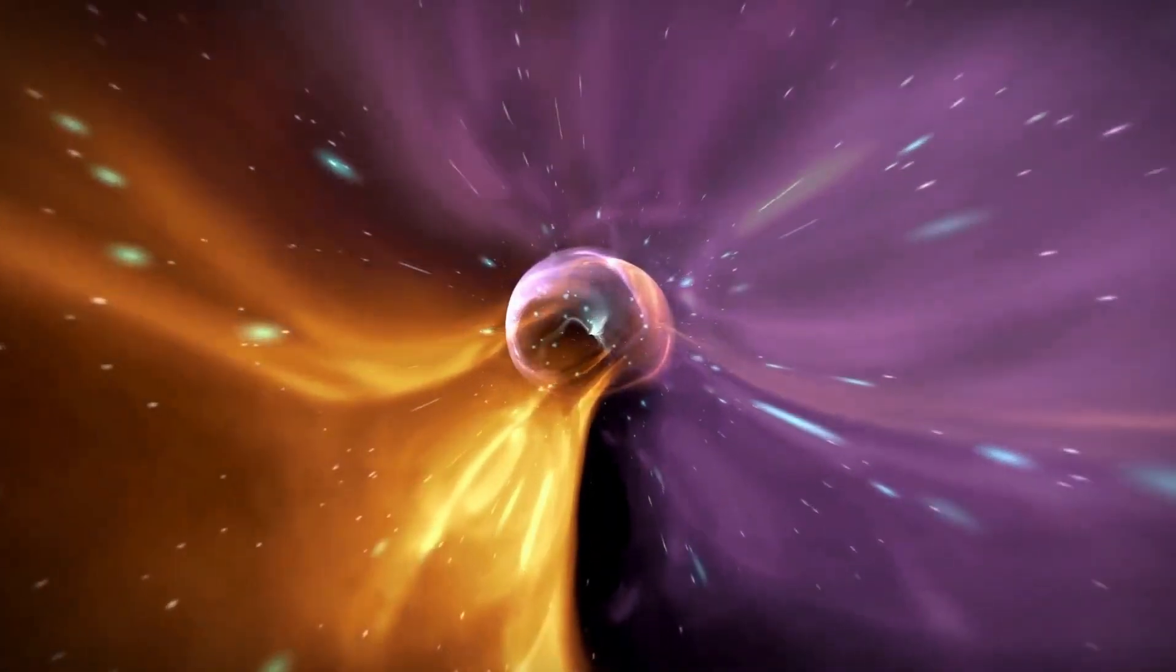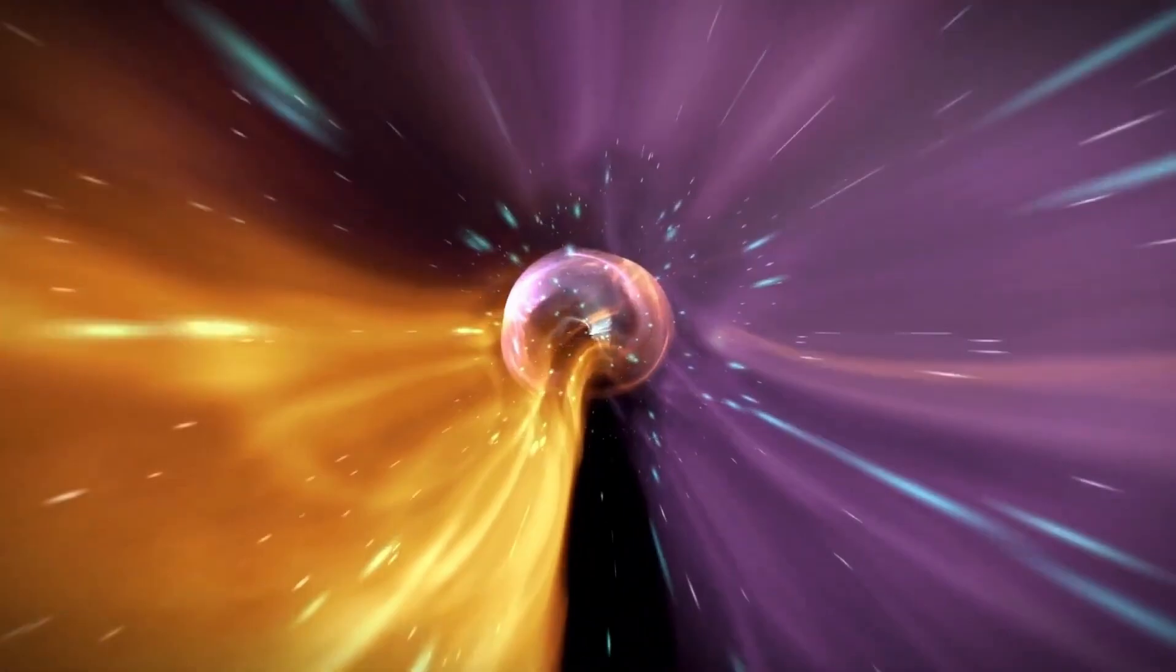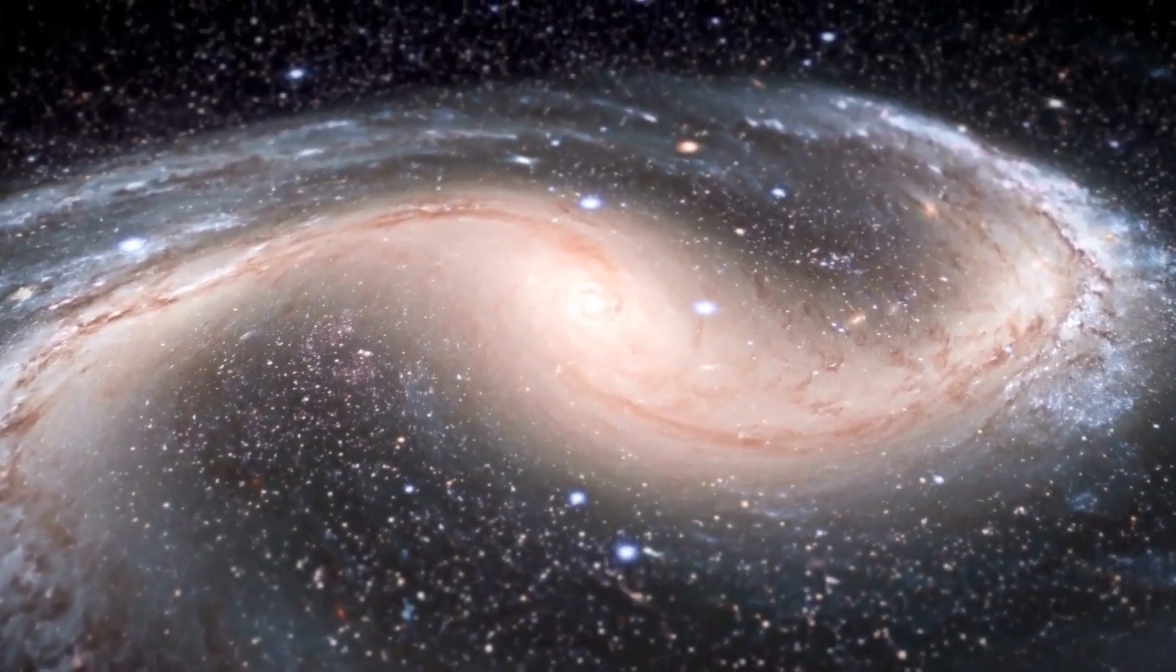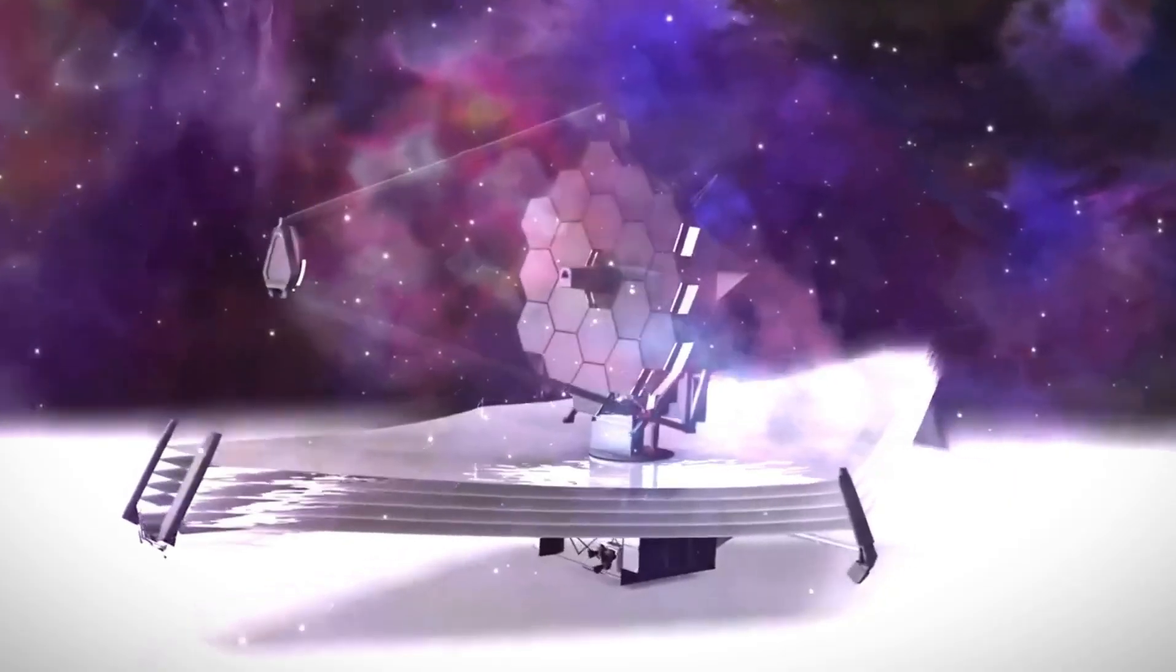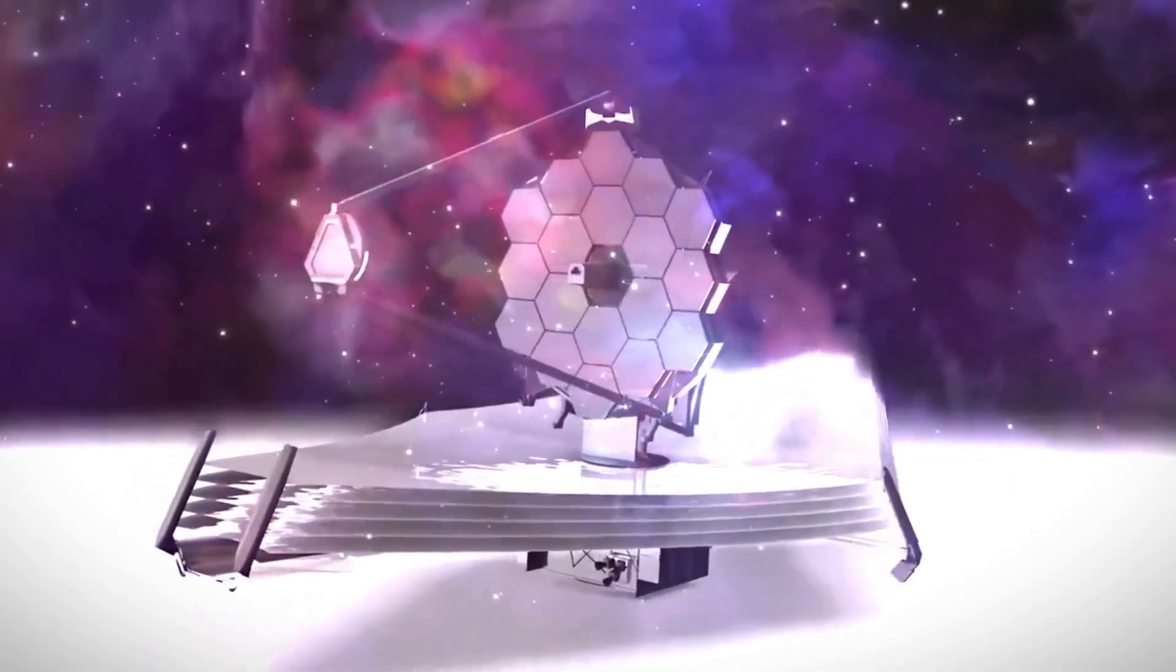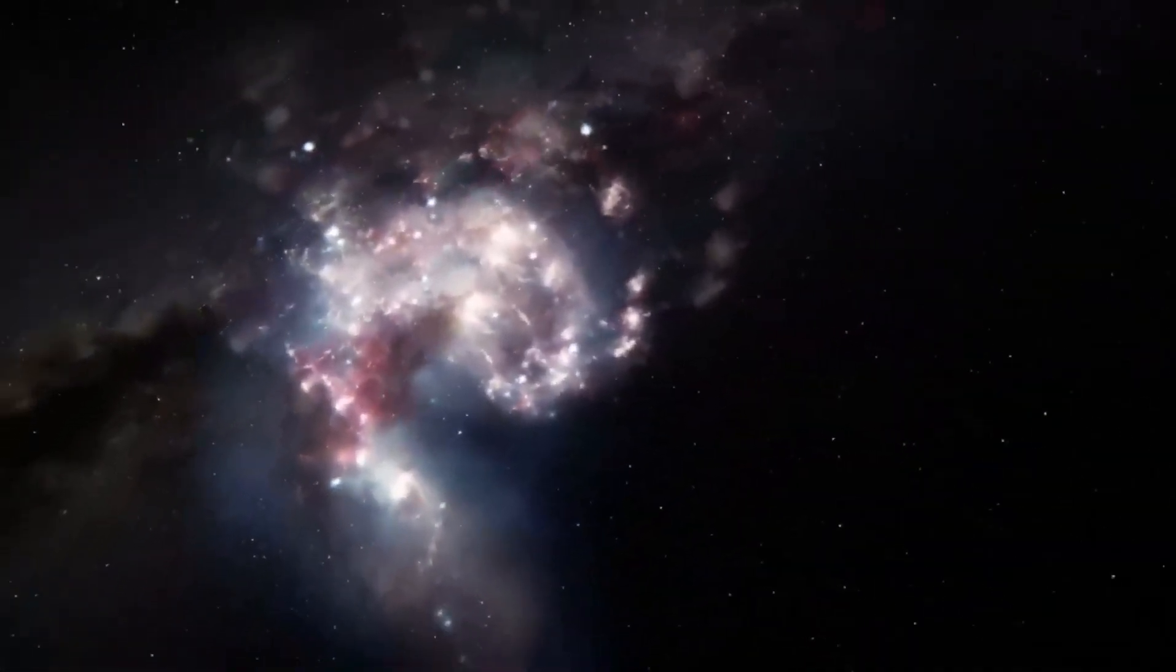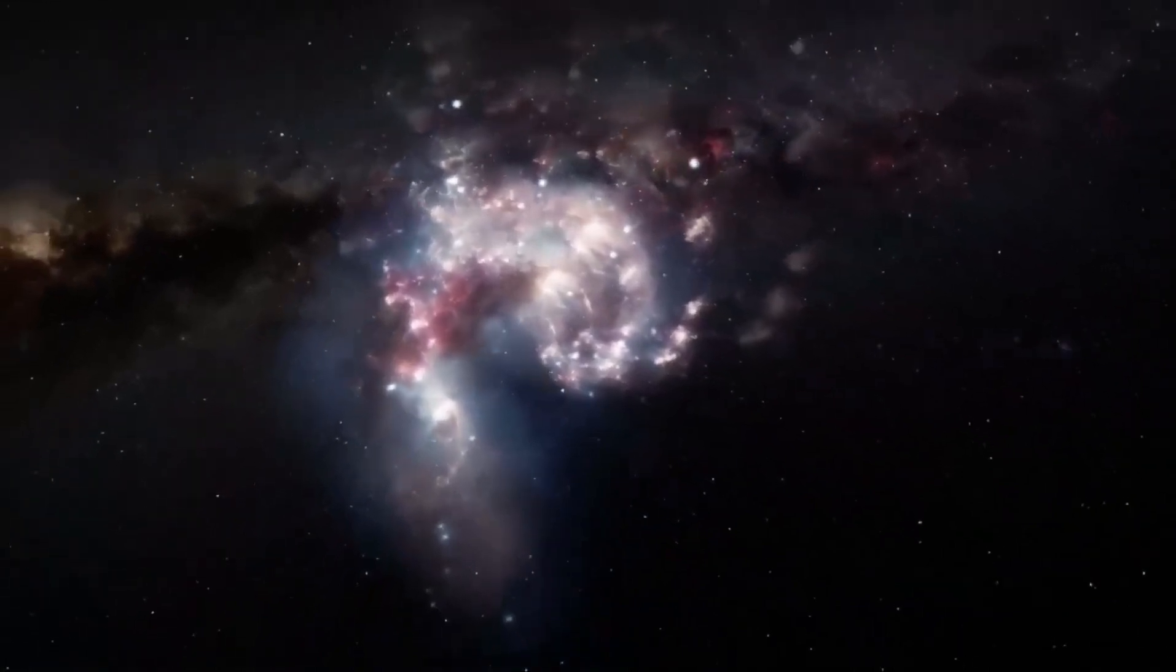But most surprising of all, the extreme gravitational attraction near a black hole gives rise to a phenomenon known as time dilation. What happens in this situation is that as objects approach the event horizon of a black hole, time appears to pass more slowly compared to observers farther away from the black hole. This phenomenon, predicted by Einstein's theory of relativity, is due to the warping of space-time caused by the intense mass of the black hole.